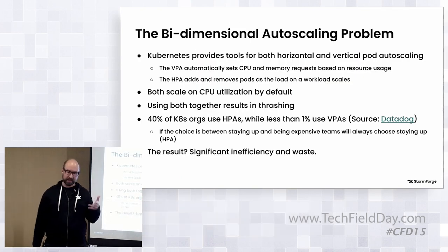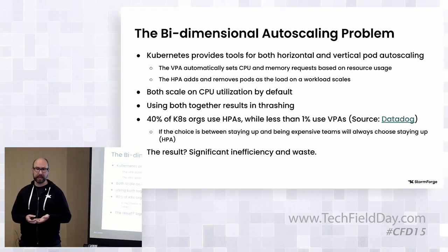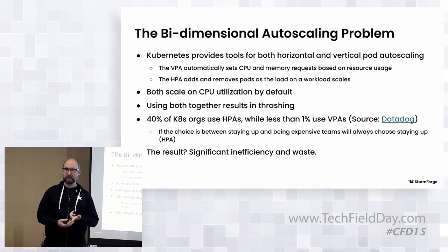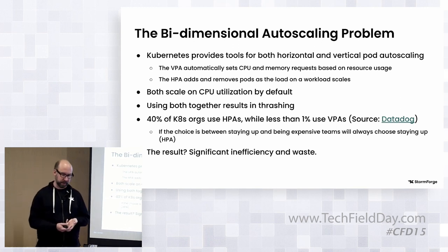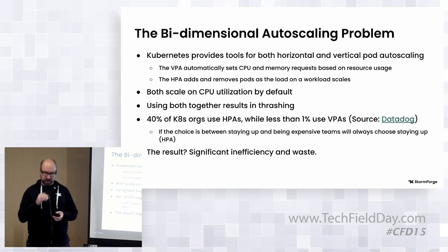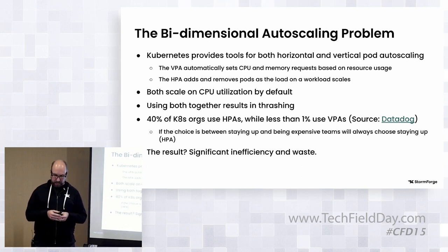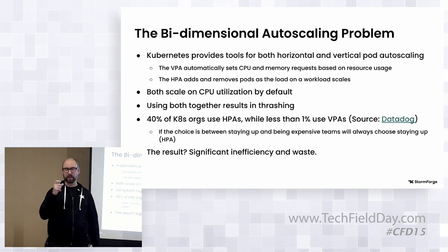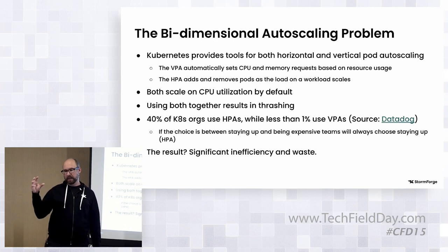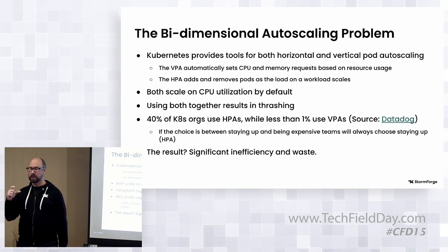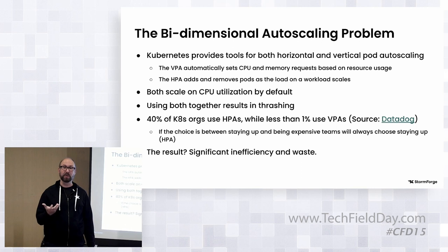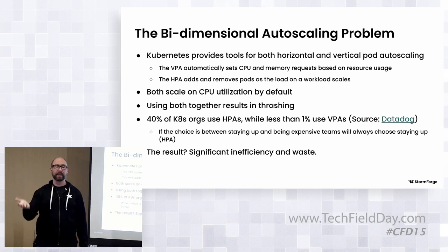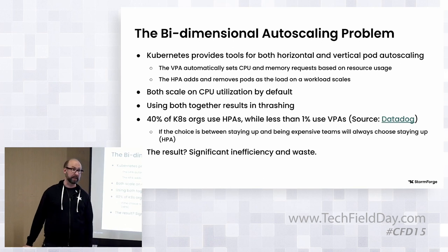The challenge that customers face is that they have two options when it comes to autoscaling in Kubernetes: the VPA, or Vertical Pod Autoscaler, and the HPA, or Horizontal Pod Autoscaler. VPA is arguably a little older than the HPA, and it's based on resource utilization — kind of like right-sizing. The challenge is you have to know your app kind of right away. A lot of app teams don't pay attention to that, and going back to fix it is probably the lowest priority on the tech debt pile.